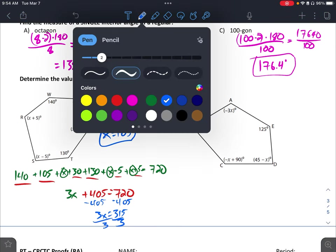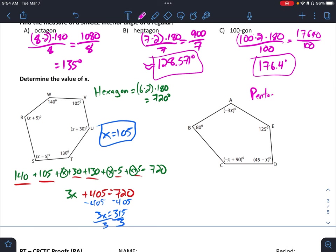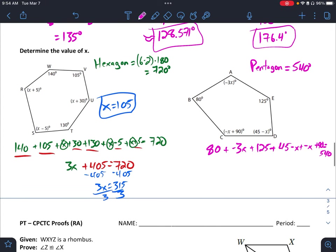Same idea with this next one. Here we have a pentagon, which we can calculate as 540 degrees. A little bit harder maybe with the negatives. 80 plus negative 3X plus 125 plus 45 minus X plus negative X plus 90 equals 540. Combine X's. Negative 3X, negative X, negative X. Gets you negative 5X. Combine numbers. 80, 125, 45, 90. Gives you 340 equals 540. Subtract 340. Negative 5X equals 200. Divide negative 5. X is negative 40.